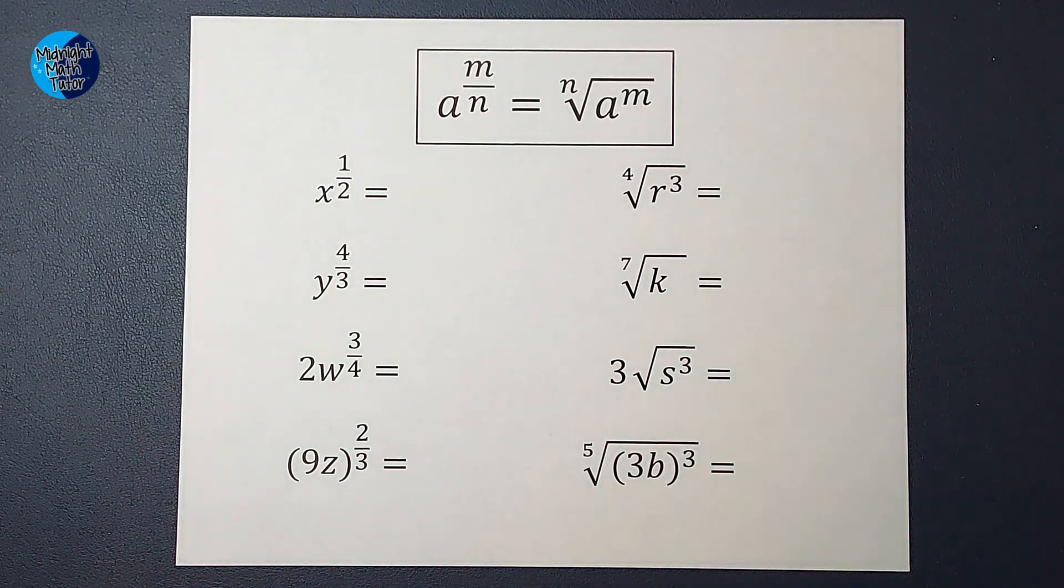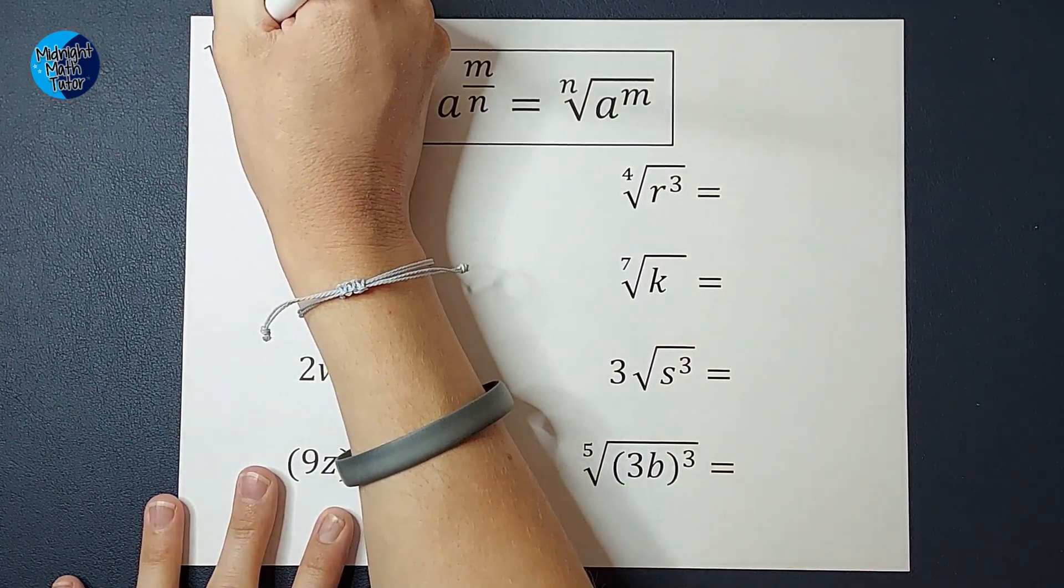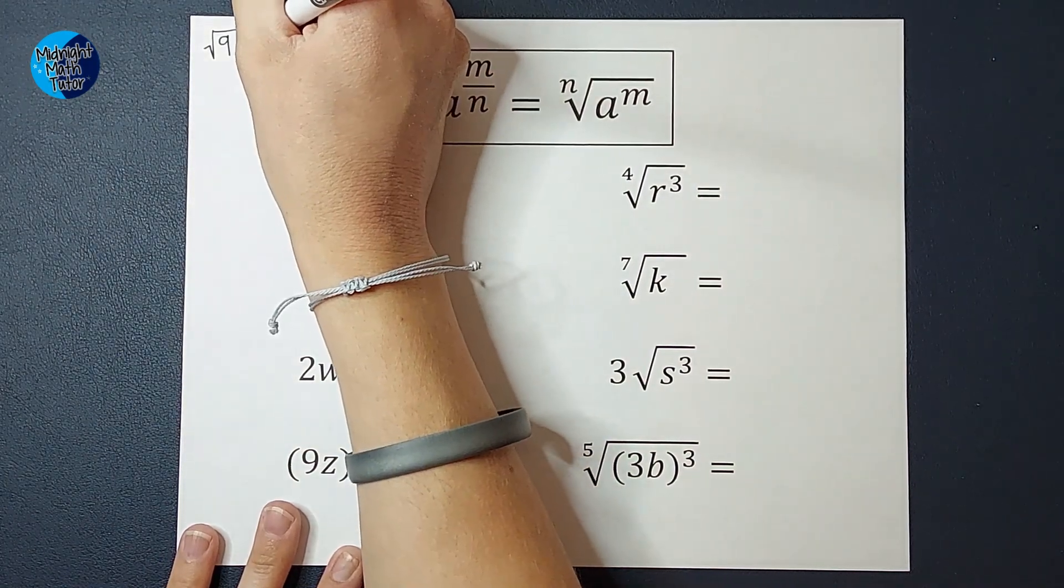There's just a couple things I wanted to remind you of very quickly. When we're working with square roots, so when we have like the square root of 9, that's asking me what number times itself gives me 9. So my answer is 3.